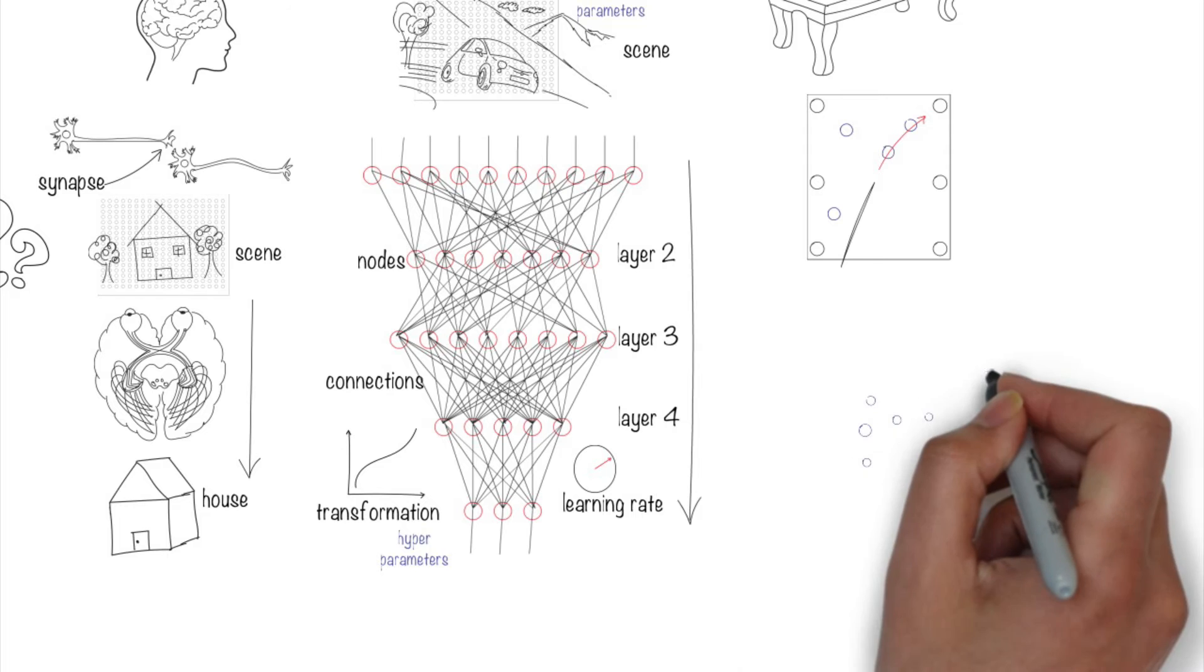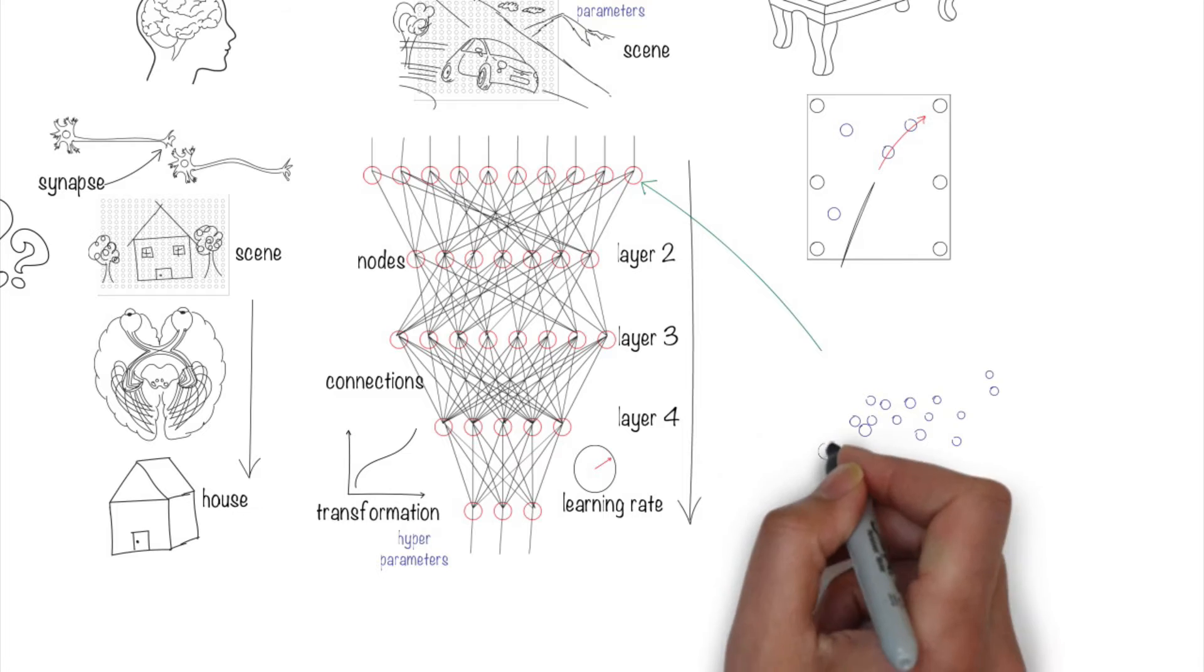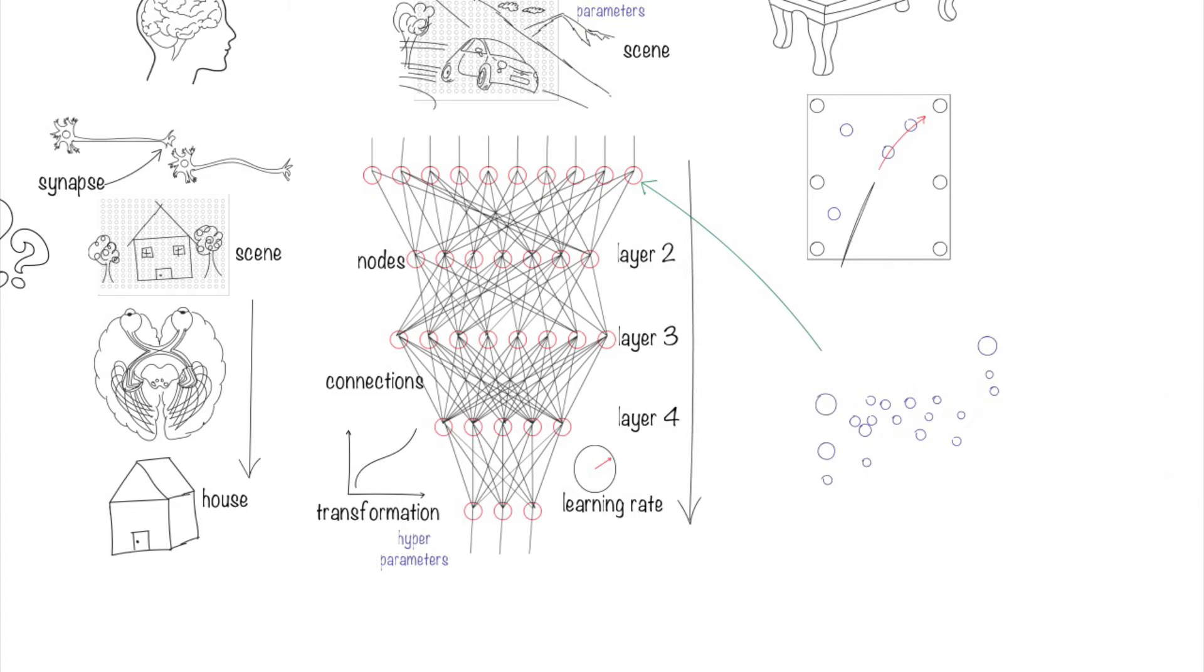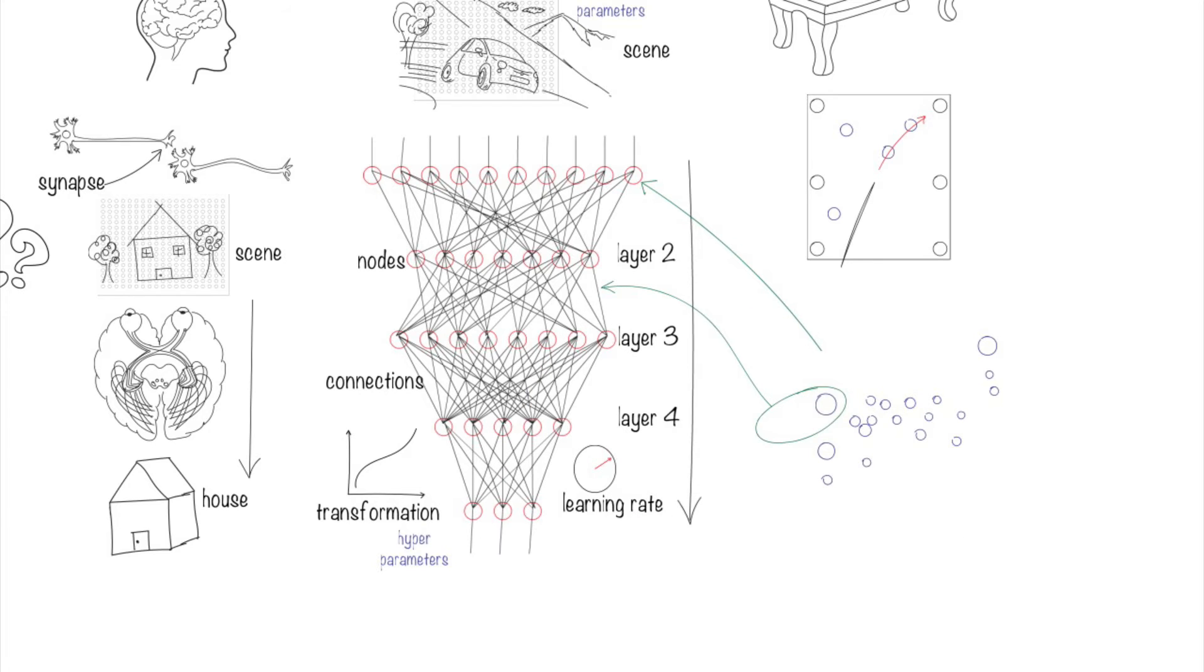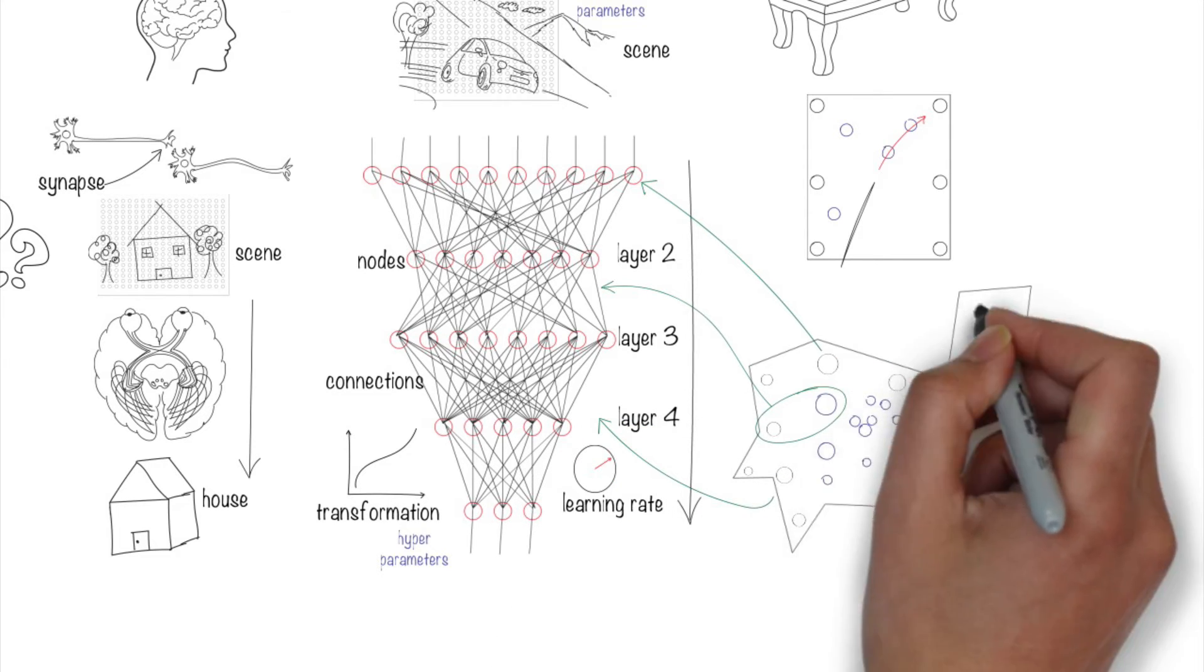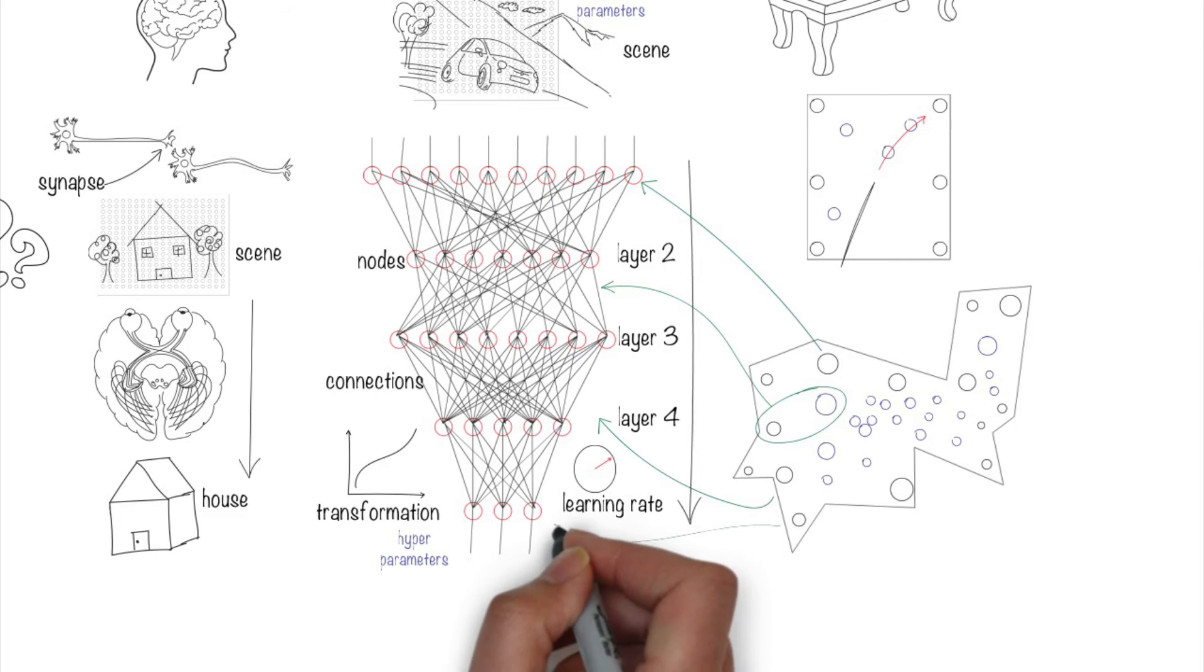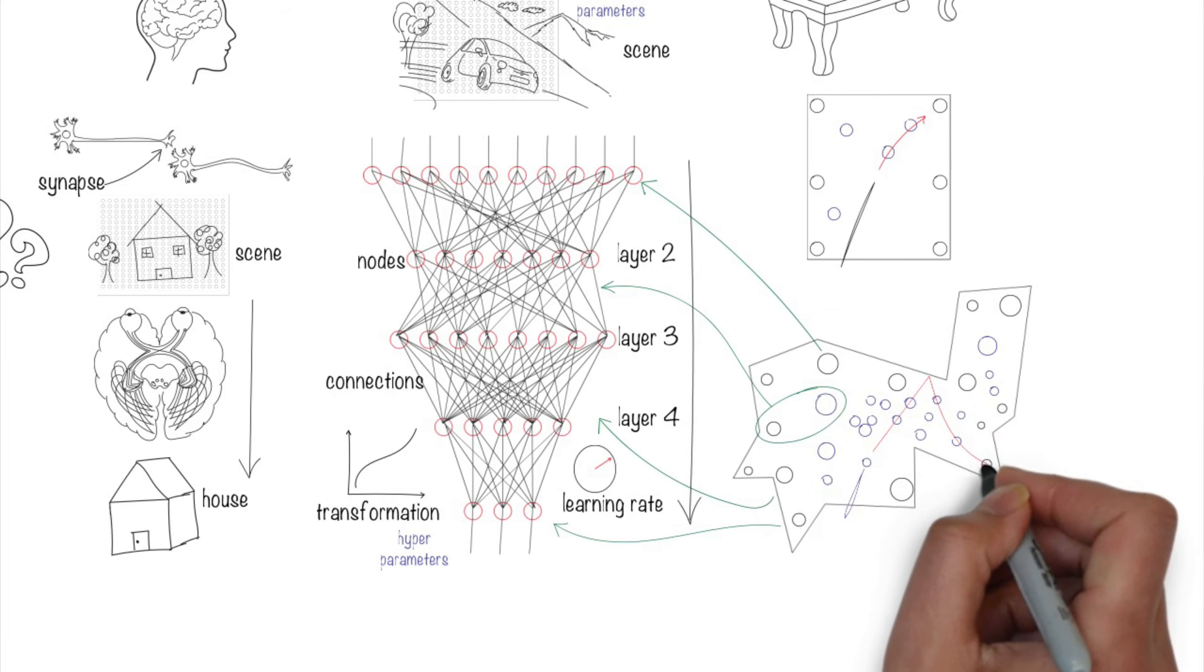As you increase the number of balls, that's analogous to the number of nodes. Change the size of each ball, which is analogous to the connection weights. Change the shape and the size of the billiards table itself, which is analogous to the network size. The number of pockets is analogous to the outputs. The explainability of why a certain ball fell into a certain pocket becomes very difficult.